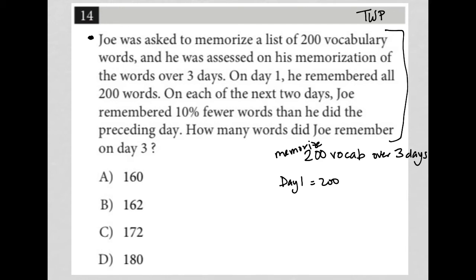On each of the next two days, Joe remembered 10% fewer words than he did the preceding day. So for day two, that means he only remembered 180 words. 10% of 200 equals 20, so he remembered 10% less — we subtract 20 from 200 and get 180.